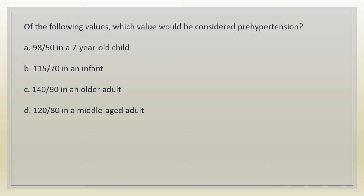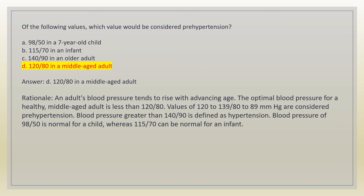Of the following values, which would be considered pre-hypertension? A. 98/50 in a 7-year-old child. B. 115/70 in an infant. C. 140/90 in an older adult. D. 120/80 in a middle-aged adult. Answer: D. 120/80 in a middle-aged adult. Rationale: the optimal blood pressure for a healthy middle-aged adult is less than 120/80. Values of 120-139/80-89 mmHg are considered pre-hypertension. BP greater than 140/90 is hypertension. 98/50 is normal for a child and 115/70 can be normal for an infant.